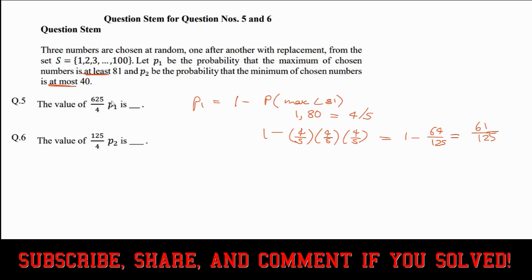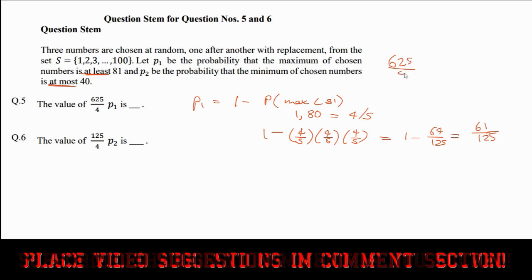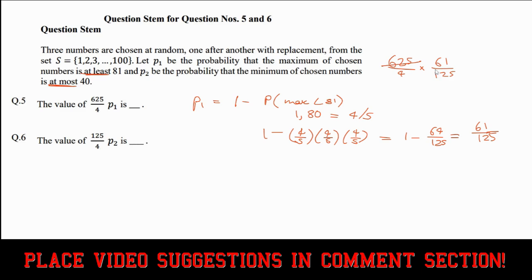Now this, we can't put that in yet because it's asking for 625 over 4 times P1. I'll do it on top over here, so that's times 61 over 125. This cancels with this to give us 5, and 5 times 61, that's just going to be 305, divided by 4. So that's our answer. So it's going to be 305 over 4.